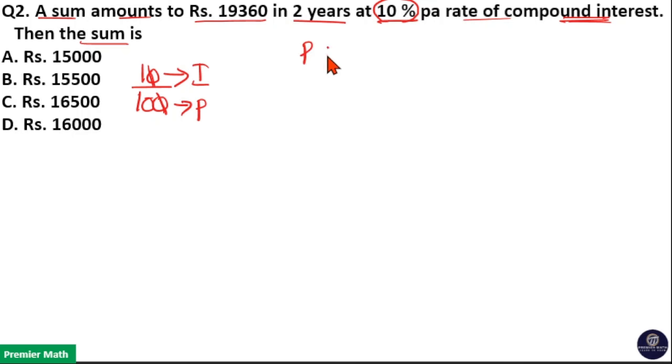If I take the ratio between principle and amount, here principle is 10 unit and amount is principle plus interest, that is 10 plus 1, 11 unit.